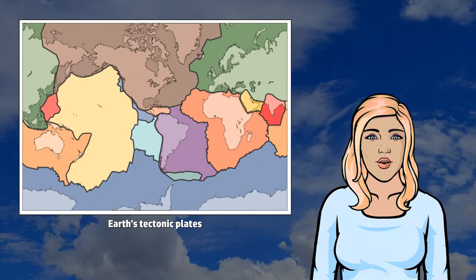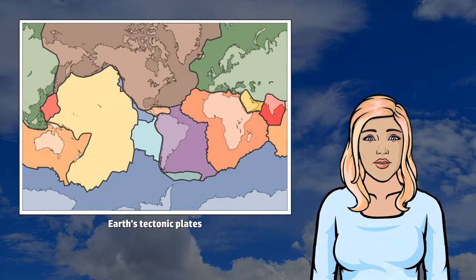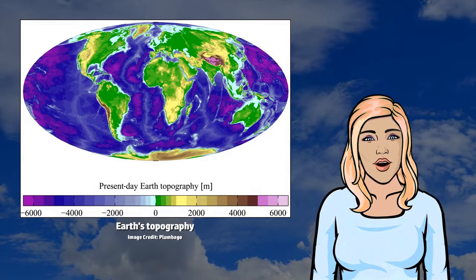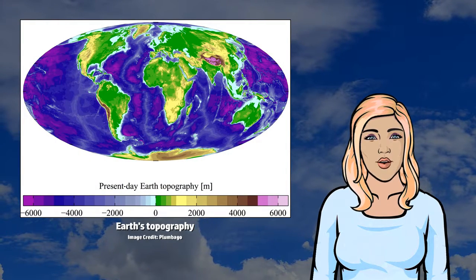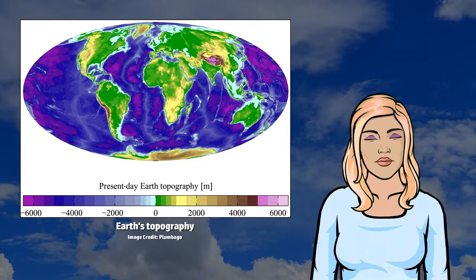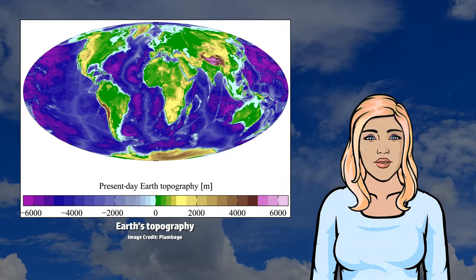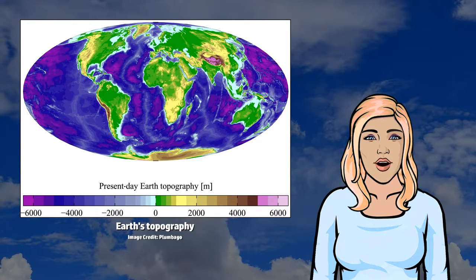About 71% of Earth's surface is covered with water, mostly by its oceans. The remaining 29% is land consisting of continents and islands that together have many lakes, rivers, and other sources of water that contribute to the hydrosphere. The majority of Earth's polar regions are covered in ice, including the Antarctic ice sheet and the sea ice of the Arctic ice pack.